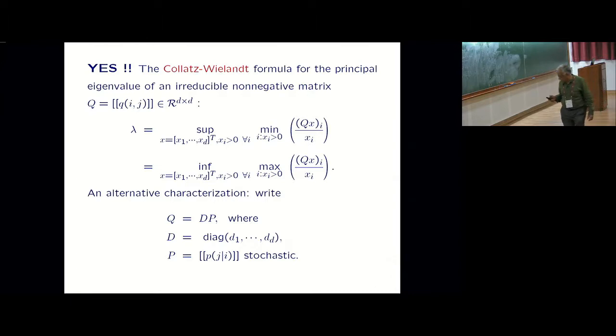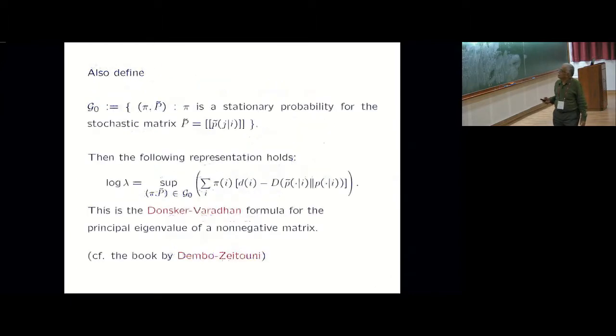So I can write a non-negative matrix as a diagonal matrix times a stochastic matrix. These are the interpretation as transition probabilities. Let script G_0 denote these pairs. P tilde is a stochastic matrix and pi is some stationary probability, need not be unique.